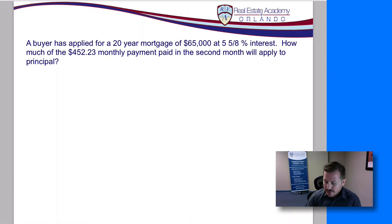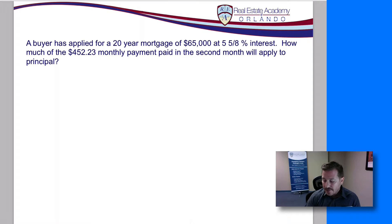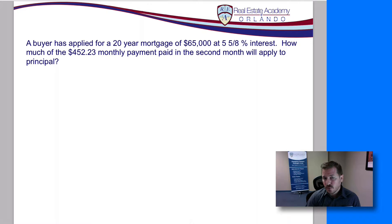We have a buyer who has applied for a 20-year mortgage of $65,000 at 5 and 5/8 percent interest. How much of the $452.23 monthly payment paid in the second month will apply to the principal? They tell us the loan amount — $65,000 — the monthly payment of $452.23, and the interest rate of 5 and 5/8 percent. What we're trying to solve is how much of our payment is applied to interest only.